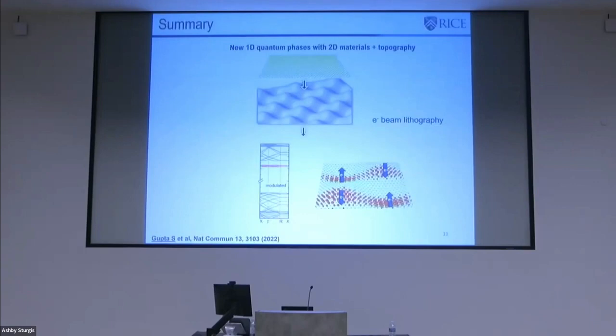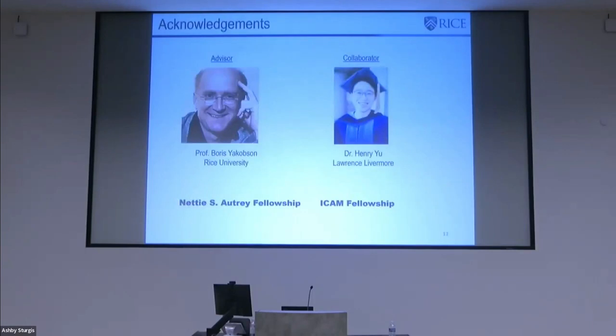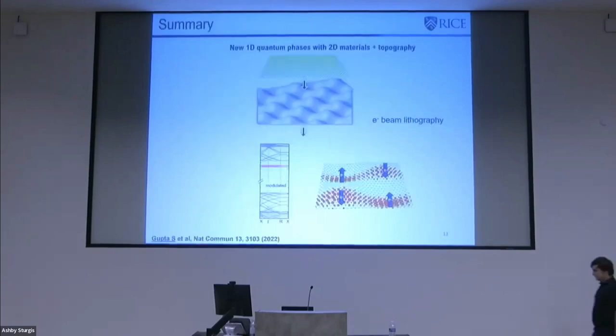I think I'm done, so with that I would like to summarize. Here I've shown a simple way by combining 2D monolayers as well as deformations achieved by topography, so combining those two things you can create different quantum phases. For example, with the special case of boron nitride, one can realize interesting 1D confined states by this particular arch topography. With that, I would like to acknowledge my advisor Professor Jacobsen, Rice University for the help, and also for the fellowship during my PhD, and also the National Science Foundation and Shell for their financial support. Thank you for your attention and I'm now happy to take any questions.